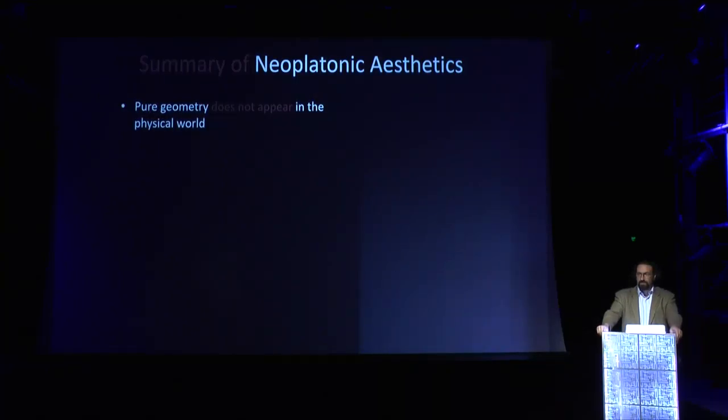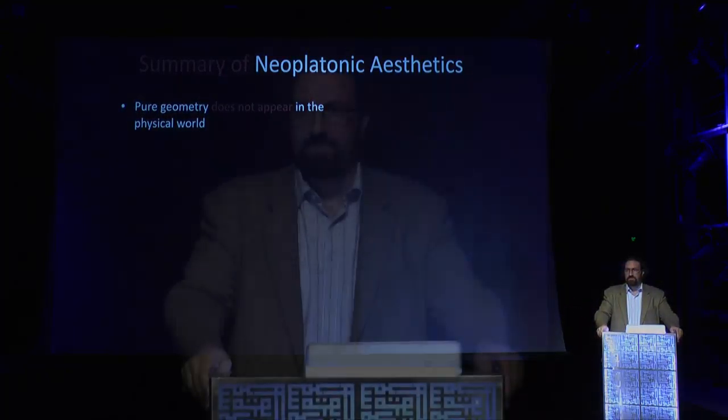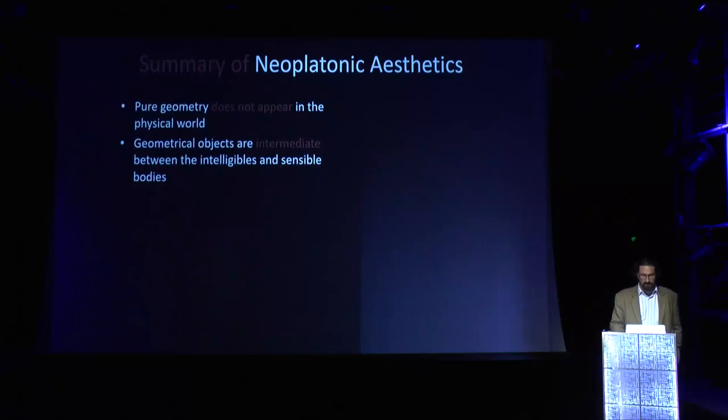One of the most problematic things in existence that troubled the Neoplatonists was mathematical objects — how do they exist? They're not physical things, and they're not purely intelligible things. If you look around you don't see geometry, you see physical things; yet somehow underpinning the physical world there are numbers and geometric principles. They thought geometry can't be purely intellectual either, because geometric forms have a certain extension and measure.